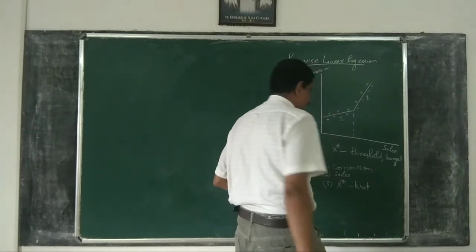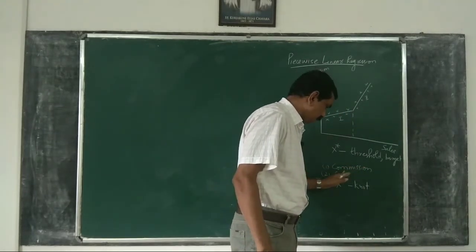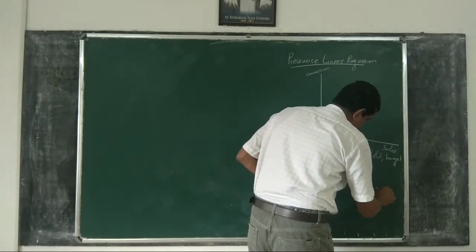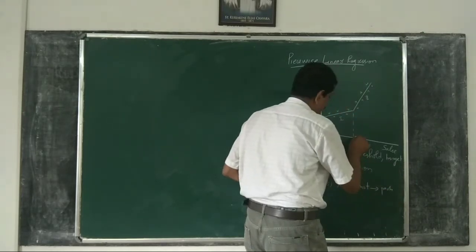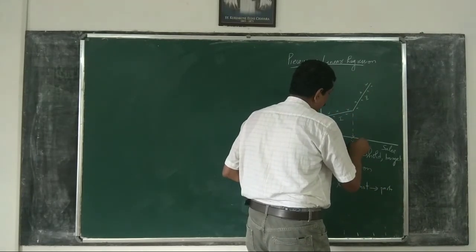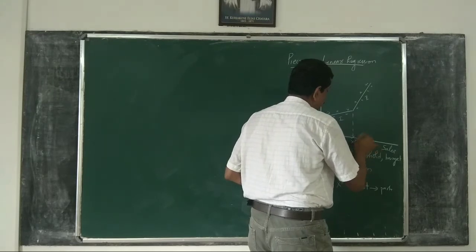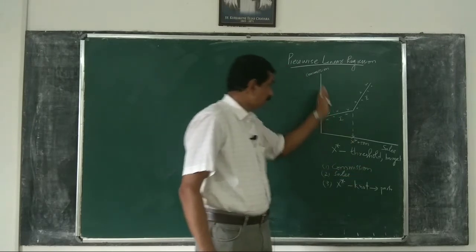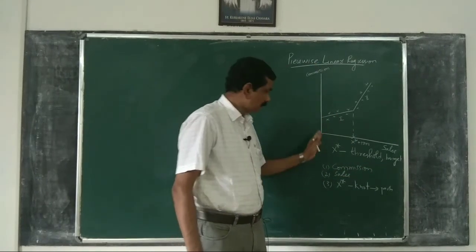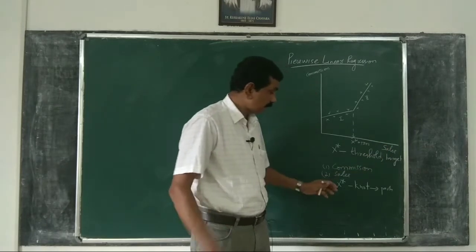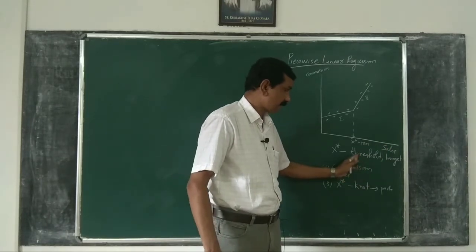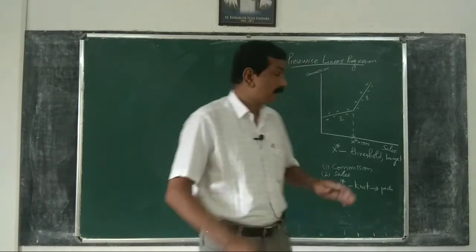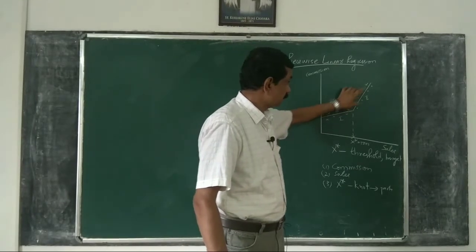x* is not a variable in the usual sense — it is a particular fixed value only. For example, x* might equal 5000. So if you have data on commission, data on sales, and if you know the value of x*, the threshold, then you can test the possibility of piecewise regression.